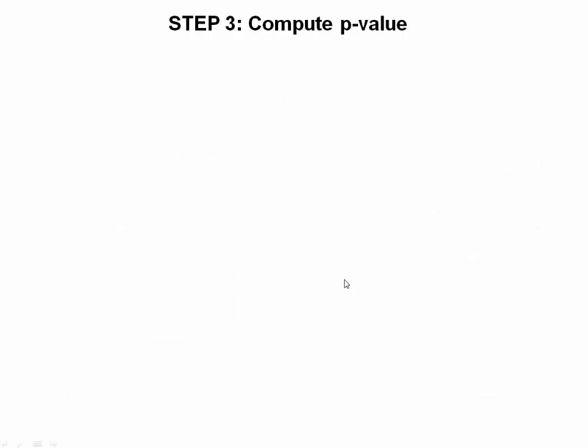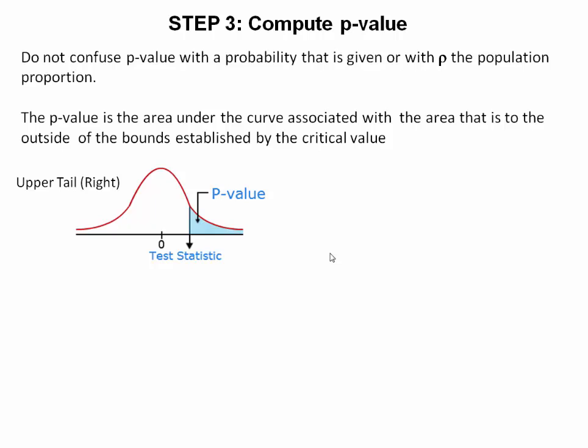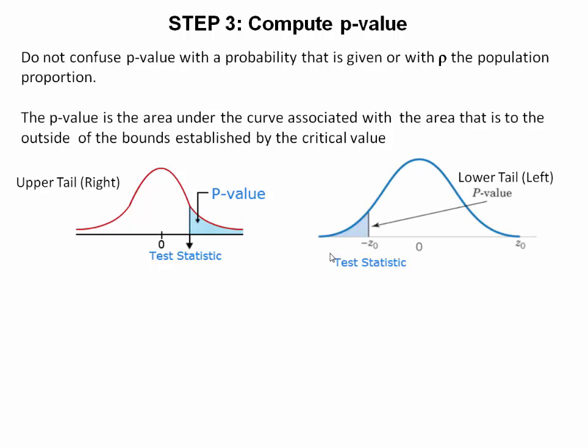On the other side of the coin, we have to be able to compute the p-value. Do not confuse the p-value with a probability that is given, or with p, the population proportion. The p-value is the area under the curve to the outside of the bounds established. For example, if we compute our test statistic and plot it in a right-hand or upper-tail test, our p-value is the area under the curve to the right of our test statistic value. For a lower-tail or left-tail, the p-value is the area to the left, or to the outside, of our negative test statistic value.